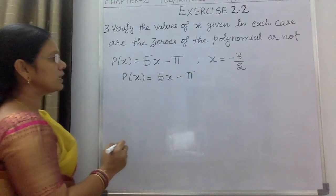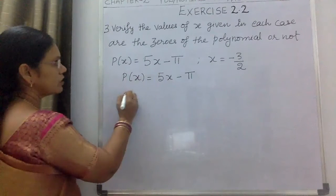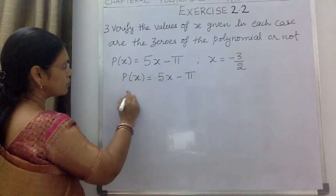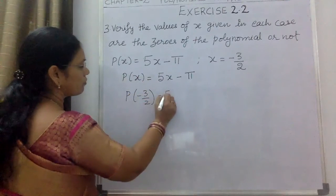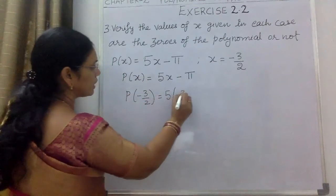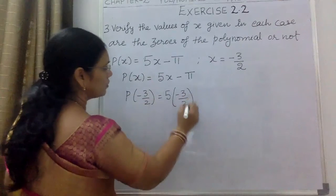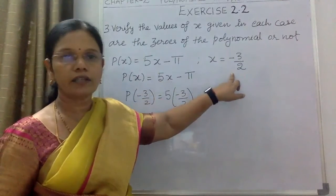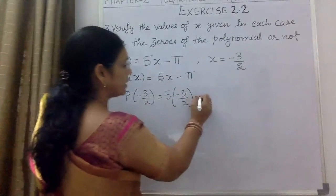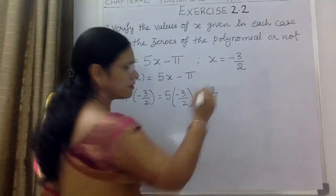π means here 22/7. So let us substitute the x value: P(-3/2) = 5 × (-3/2) - 22/7. In place of x we have written the given value -3/2, minus 22/7.